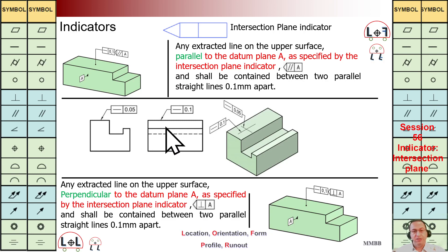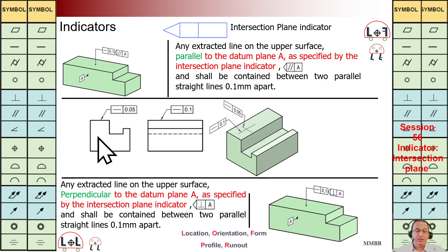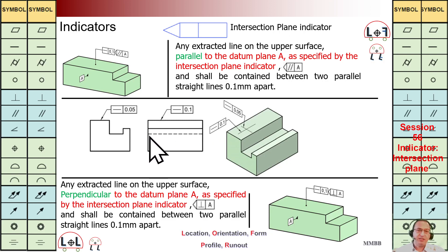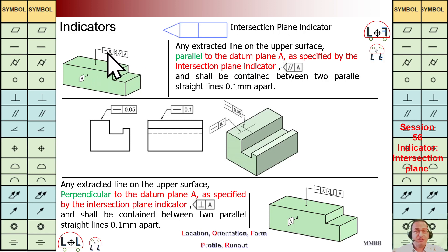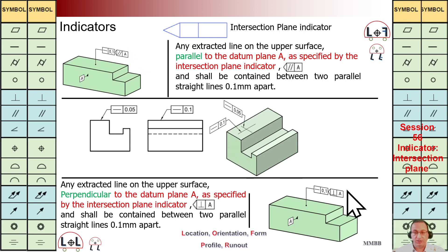Here in the middle, when we have this straightness 0.1, it means in this direction. On the left-hand side we have this one — it means straightness in this direction. In 2D we can easily see which direction. But in 3D when using this symbol, it is needed to mention in which direction. That's why we need to have this intersection plane indicator in 3D. As we can see here, on one side it is parallel to A, and on the other it is perpendicular to A. In 2D we can easily show in which direction we would like to have this straightness.